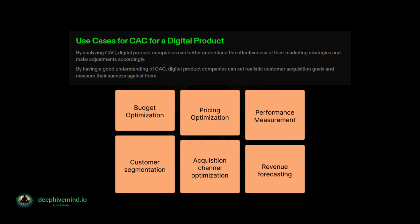Revenue forecasting: CAC can help businesses forecast their revenue accurately. By knowing the cost of acquiring a customer, businesses can calculate how many customers they need to acquire to achieve their revenue targets. CAC has several use cases across different industries and businesses. By understanding the cost of acquiring a customer, businesses can optimize their marketing and sales strategies, improve their pricing strategies, and forecast their revenue accurately.